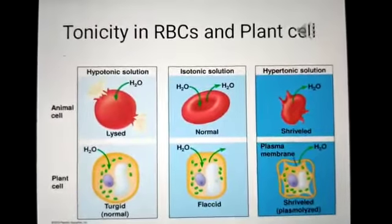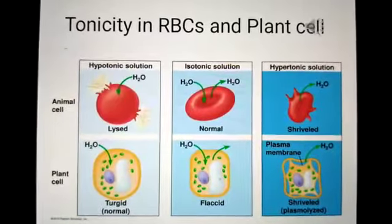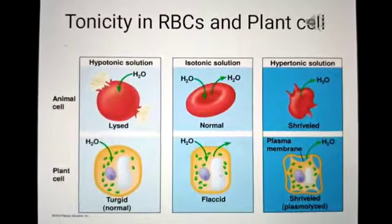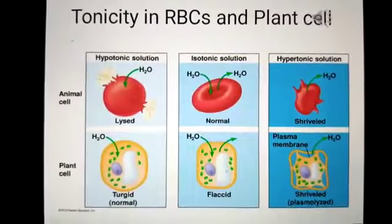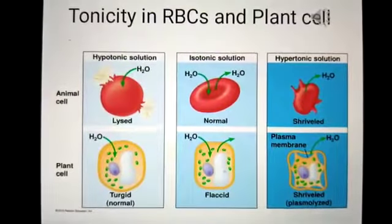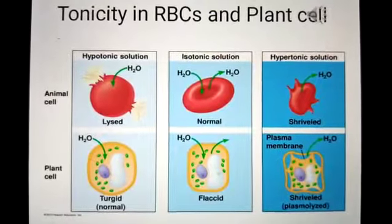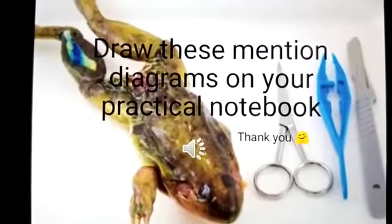In this slide you have to determine the effect of tonicity on plasmolysis in plant cells and on red blood cells. Here you can see the diagram of an animal cell in which a red blood cell is presented, and the next one is a plant cell. You can see three conditions: hypotonic, isotonic, and hypertonic. Dear students, you should draw these mentioned diagrams in your practical notebook. Thank you.